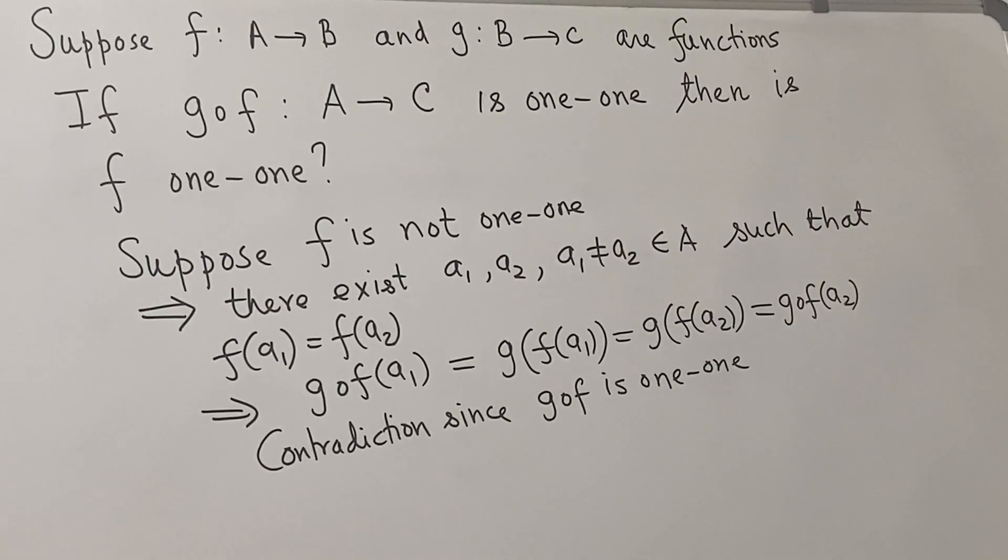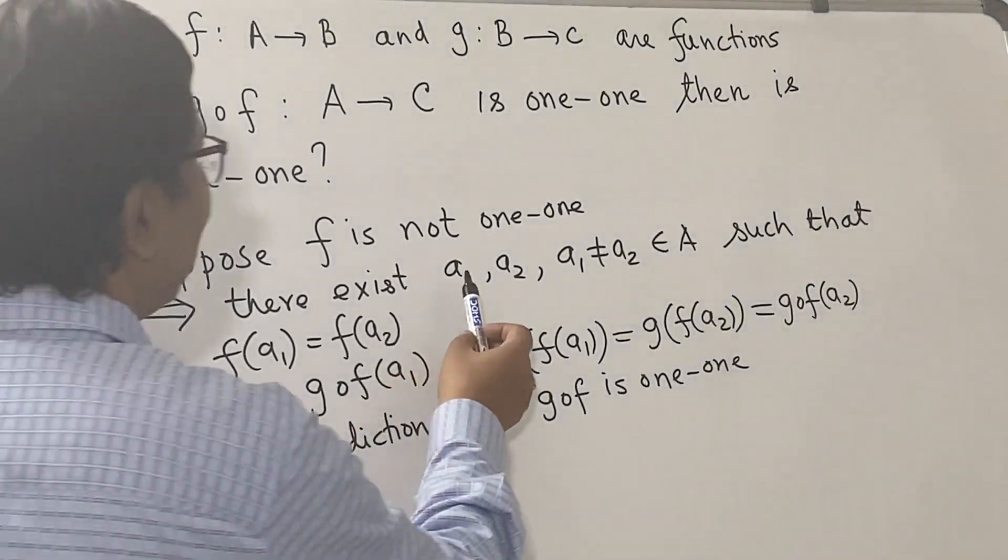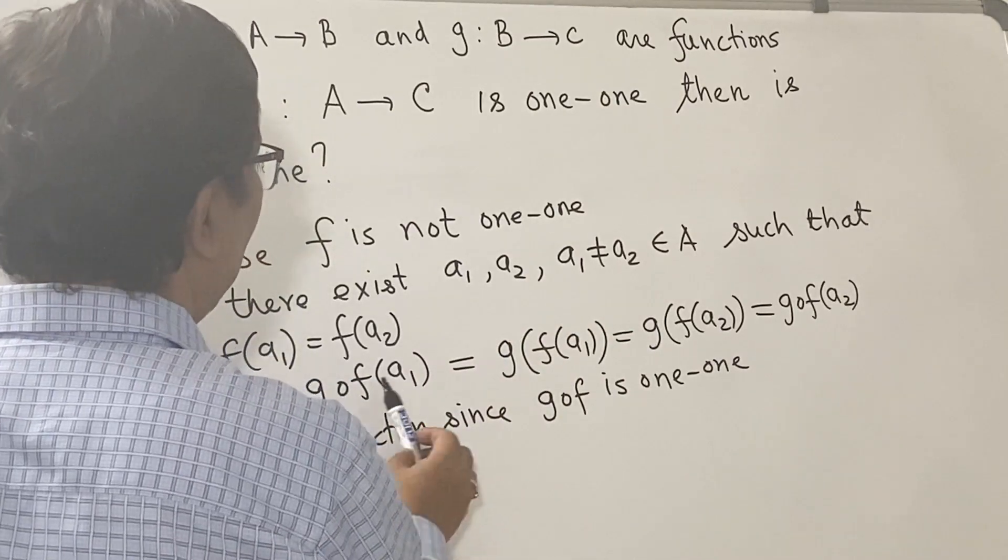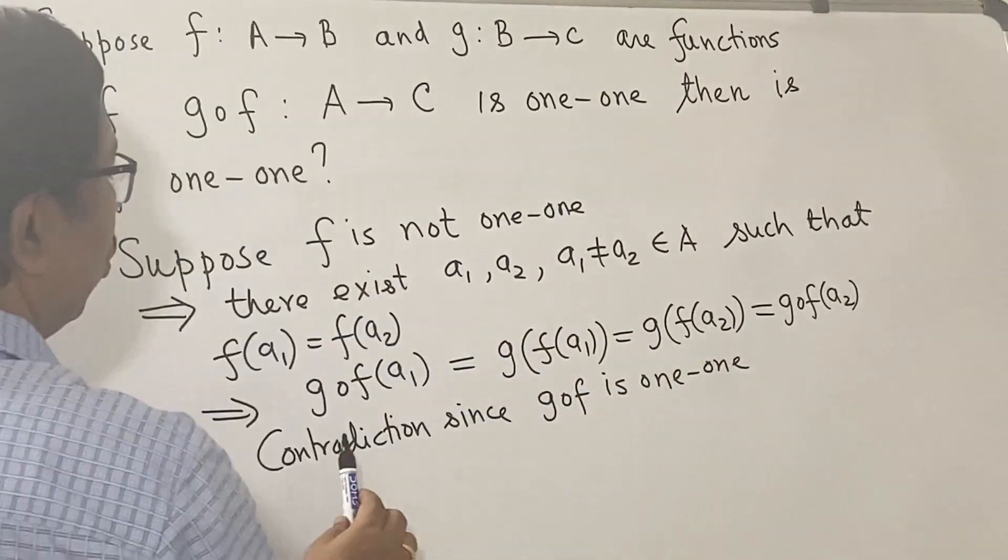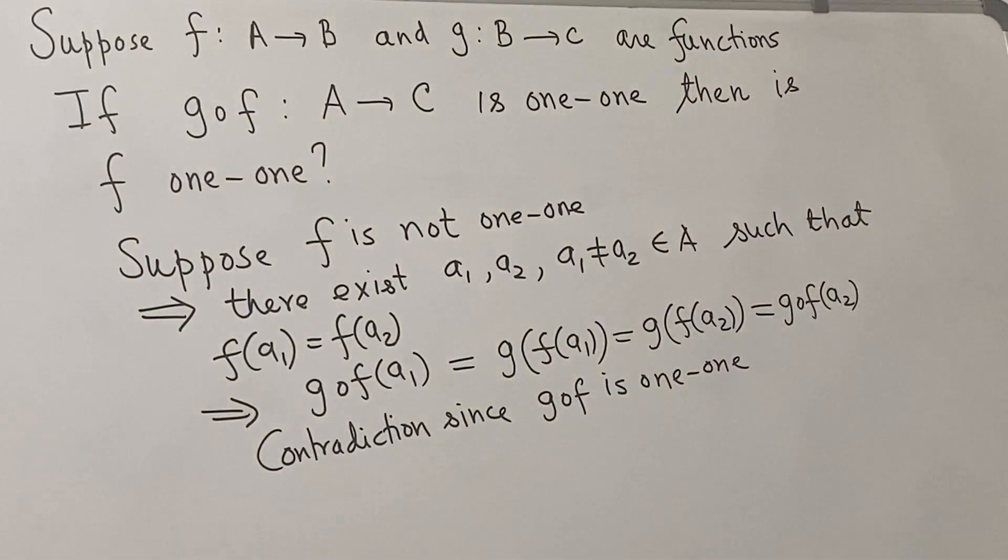Since g∘f is one-to-one, it is not possible to have two distinct points a₁, a₂ such that g∘f(a₁) = g∘f(a₂). Therefore, we have arrived at a contradiction. Contradiction to the assumption that f is not one-to-one.